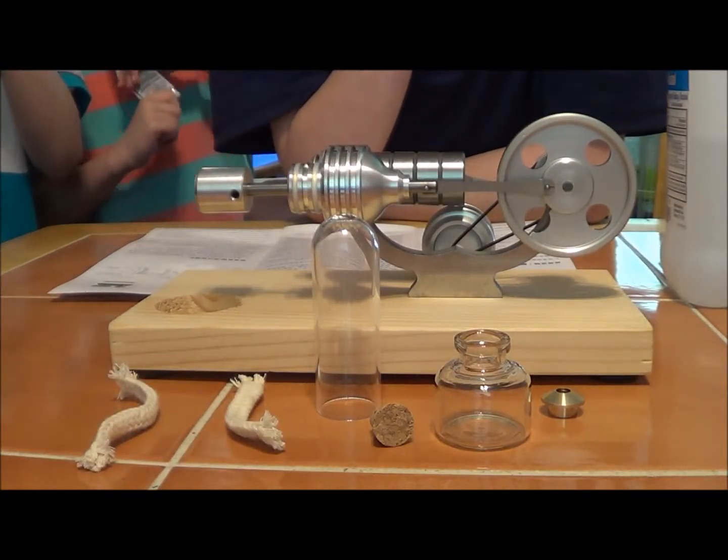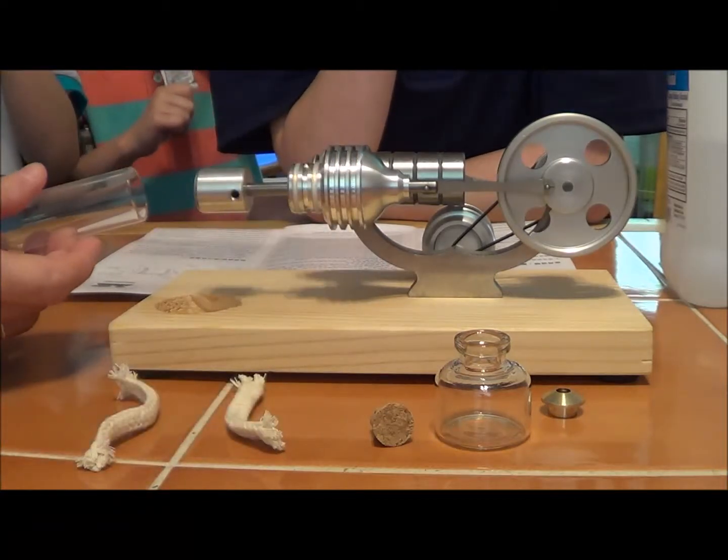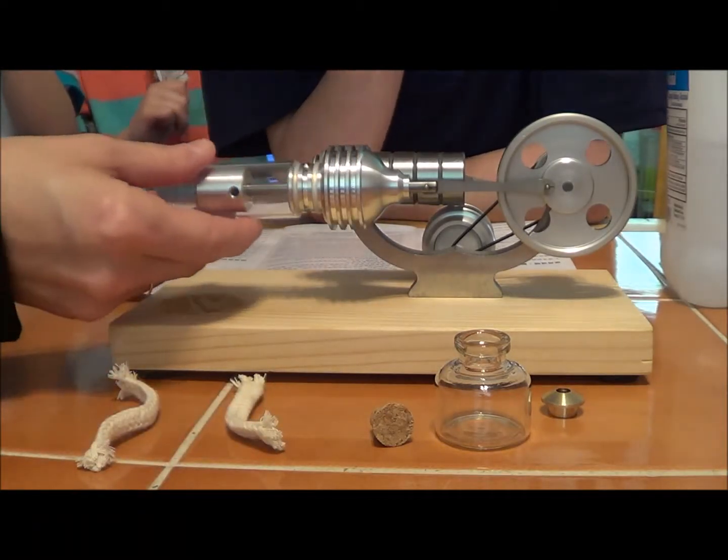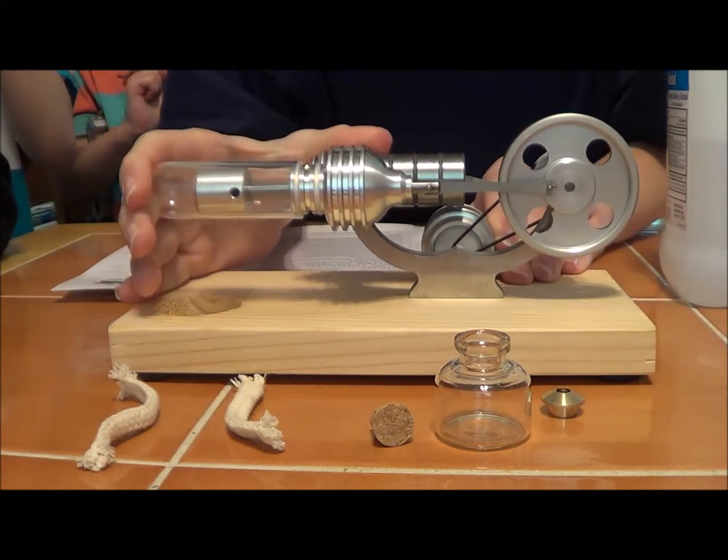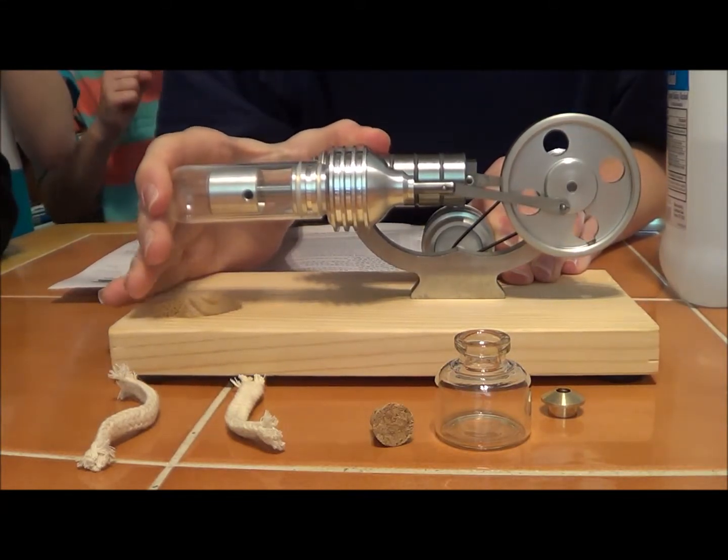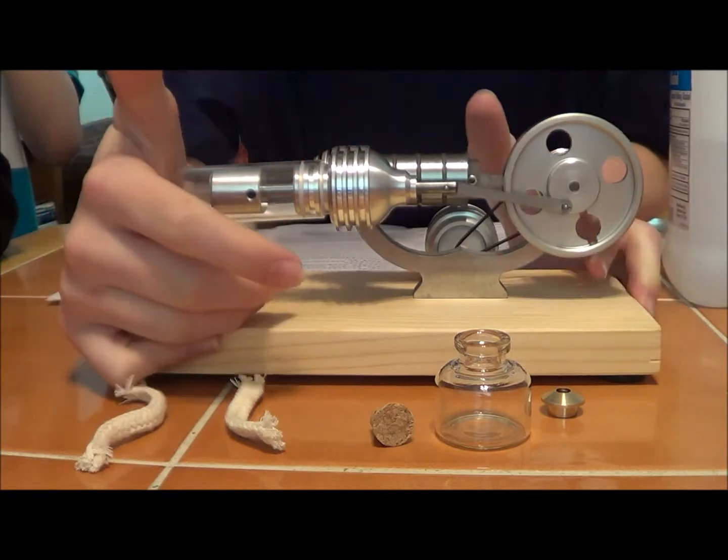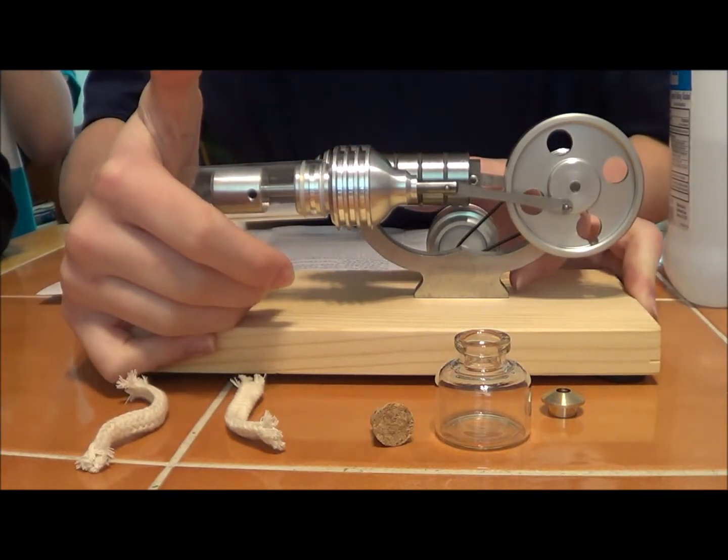You can see here all of the pieces that it comes with, and the first thing you need to do when you get it is place the glass cylinder over the end. It has a couple of little rubber pieces that it has to really fit over, so you've got to give it a pretty good push until it fits completely flush up against the other piece, and it'll cover that piston.